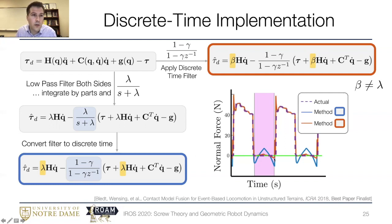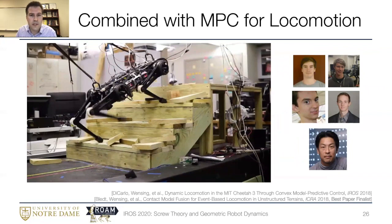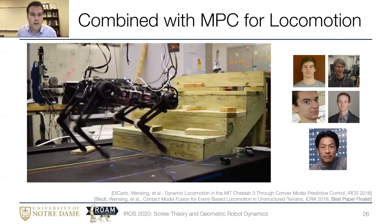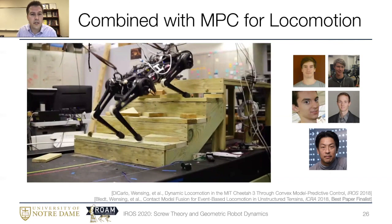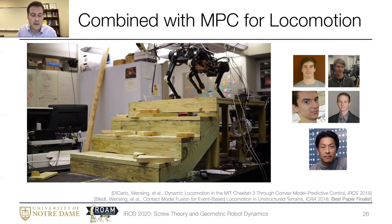Let me show you the application of this once we combine it with MPC for locomotion. So here, cheetah doesn't know that it's walking upstairs. There's no cameras. It's simply feeling that it's collided with the stairs through this disturbance observer, and then modifying its control, turning off its swing-like control, and switching to stance-like control via MPC. So this work was collaborative in the experiments. They were with a really phenomenal team of folks at MIT.